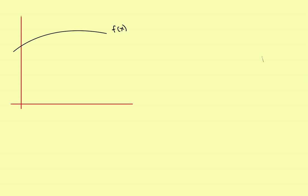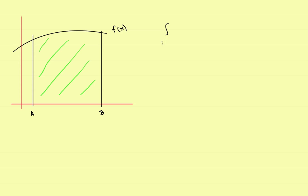Let's look at a sample problem and see where this comes from. Suppose you've got a function f of x. To find the area under that function between two limits a and b, you know how to find the area under a single curve — it would be this shaded green area. So if I wanted that green area, it would be the integral from a to b of f of x dx.